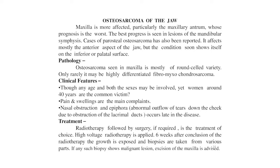In osteosarcoma of the jaw, the maxilla is more often affected, particularly the maxillary antrum, whose prognosis is the worst. The best prognosis is seen in lesions of the mandibular symphysis. Cases of periosteal osteosarcoma have also been reported. Pathology: osteosarcoma of the jaw in the maxilla is mostly of the round cell variety; rarely it may be highly differentiated fibromyxochondrosarcoma.